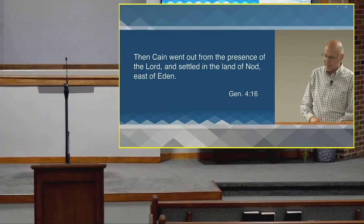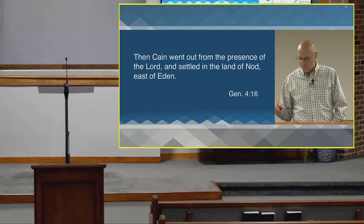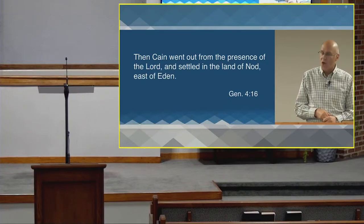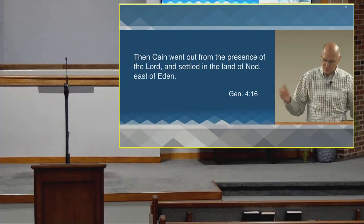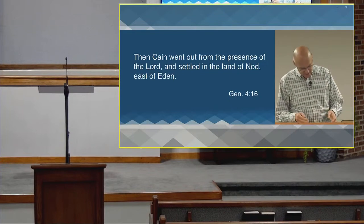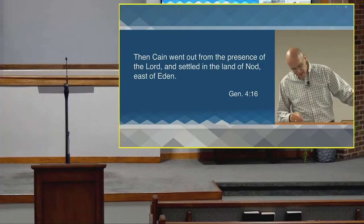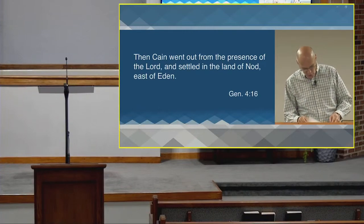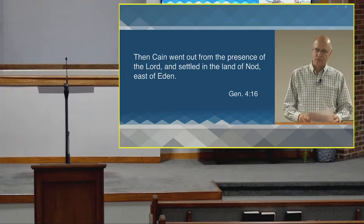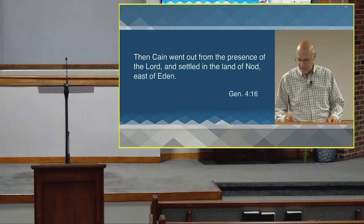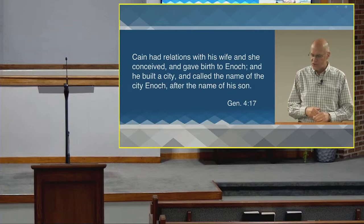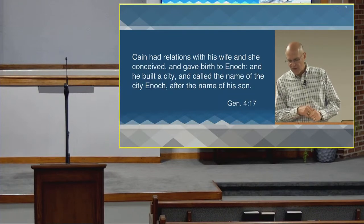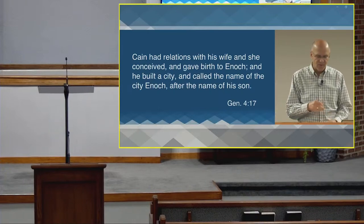Genesis chapter four, verse 16: 'Then Cain went out from the presence of the Lord and settled in the land of Nod, east of Eden.' The word Nod means 'wandering,' suggesting that Cain left the proximate area of the garden and began to wander, or he lived in a place called Nod but lived as a nomad without fixed roots. Verse 17: Cain had relations with his wife and she conceived and gave birth to Enoch. He built a city and called the name of the city Enoch after the name of his son. So now Cain begins his family line.